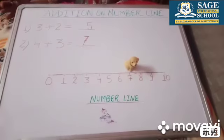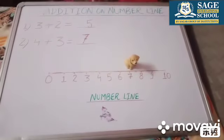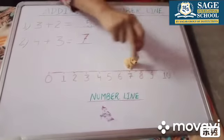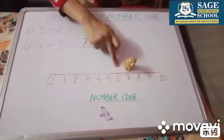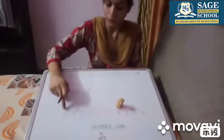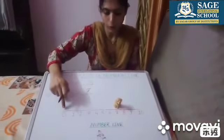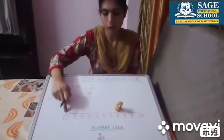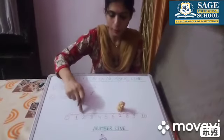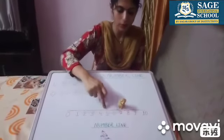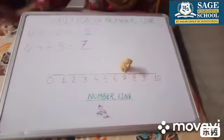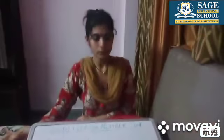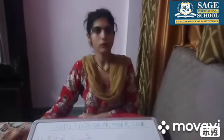I think you understood what is a number line and how to add numbers on a number line. A number line is a line in which numbers are marked, it always starts from zero, and the gap between the numbers is equal. I hope you understood this topic. Thank you.